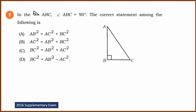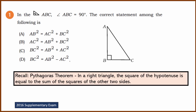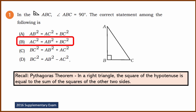What does Pythagoras theorem say? It says that in a right-angled triangle, the square of the hypotenuse is equal to the sum of the squares of the other two sides. So hypotenuse square equals the other two side squares. AB square plus BC square equals AC square. The correct answer is B.